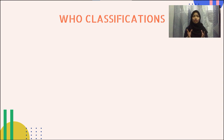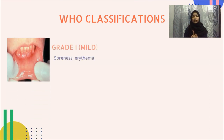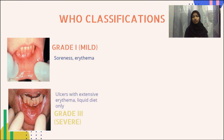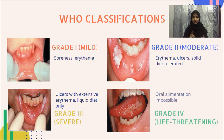Next, we will move on to the WHO classification of mucositis. The WHO scale is dependent on both objective and subjective variables, and major anatomical, symptomatic, as well as functional components of oral mucositis. Grade 1 mucositis is considered mild as it involves soreness and erythema, while grade 2 mucositis involves erythema and ulceration but the patient can still tolerate solid diet; hence it is considered moderate.